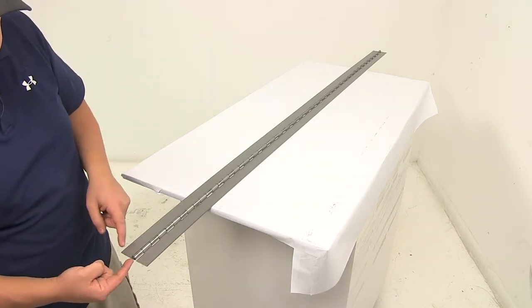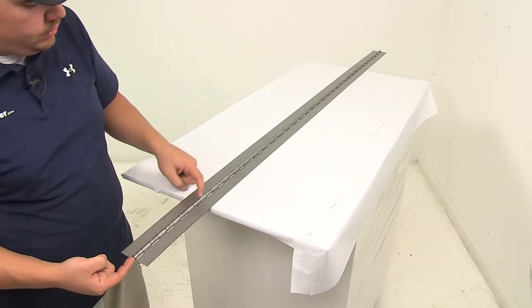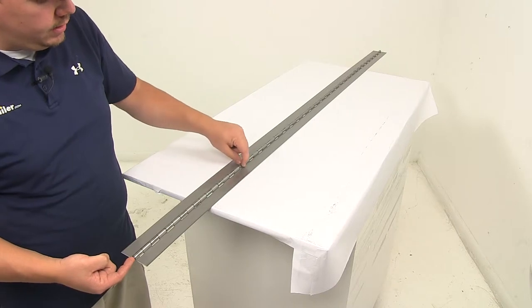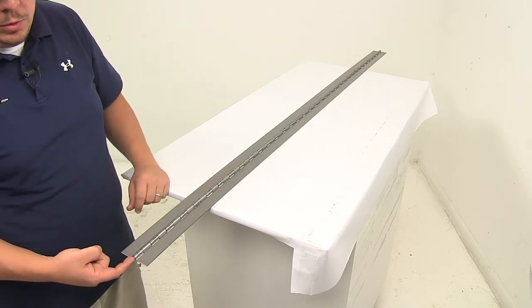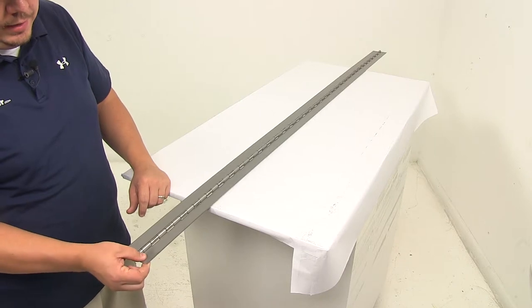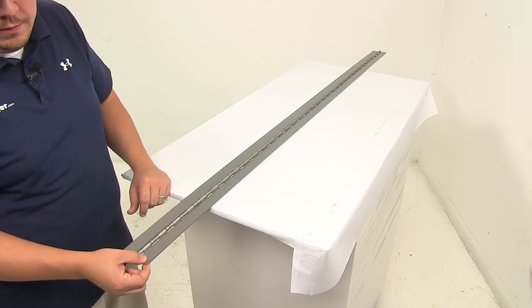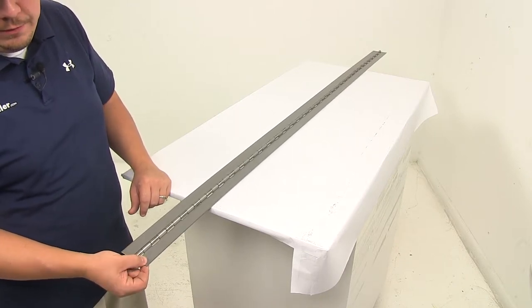Now there's a pin that runs all the way through kind of where these knuckles overlap. That pin diameter is a quarter of an inch. The gauge of steel that it's constructed out of is 0.074 inches.